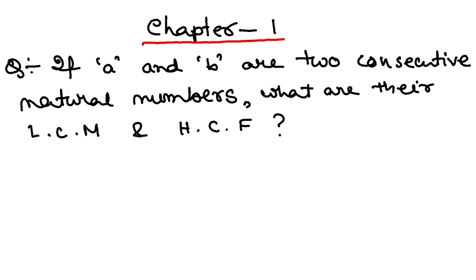The first question: if A and B are two consecutive natural numbers, what are their LCM and HCF? These questions often come in the form of MCQs. Let us take an example - suppose 7 and 8. These are two consecutive natural numbers. So what is their HCF and what is their LCM? The HCF, or highest common factor, is obviously 1 because there is nothing common between 7 and 8.